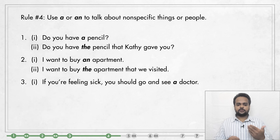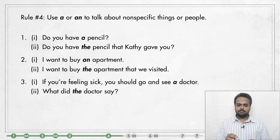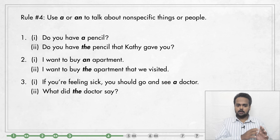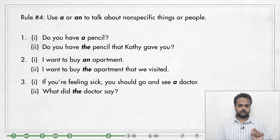And here's one last example: If you're feeling sick, you should go and see a doctor. Here, we don't mean go and see a specific doctor; we mean any doctor. But let's say your friend takes your advice and goes to a doctor. When you see your friend again, you might ask: What did the doctor say? We say 'the doctor' because we mean that specific doctor who the friend visited. So we use A or AN when talking about a person or thing in general, and THE for a specific person or thing.